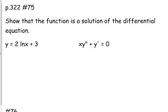Number 75 says show that the function is a solution of the differential equation. So they give you the function y equals 2 times the natural log of x plus 3, and then they give you what we call a differential equation. Now, a differential equation just means that it has derivatives in it. So it's saying that x times this y double prime plus y prime apparently equals 0. So what we need to do is we need to take our y, we need to find y prime, we need to find y double prime, we're going to plug it into that differential equation and show that when we simplify it, it's equal to 0.